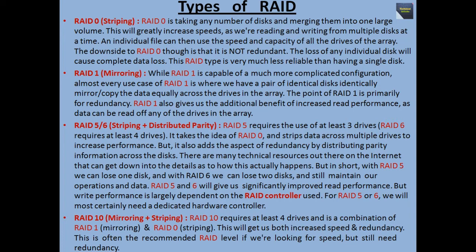Next type: RAID 5 or 6, striping plus distributed parity. RAID 5 requires the use of at least 3 drives; RAID 6 requires at least 4 drives. It takes the idea of RAID 0 and strips data across multiple drives to increase performance, but also adds redundancy by distributing parity information across the disks. In short, with RAID 5 we can lose one disk, and with RAID 6 we can lose two disks, and still maintain our operations and data. RAID 5 and RAID 6 will give us significantly improved read performance, though performance is largely dependent on the RAID controller used.